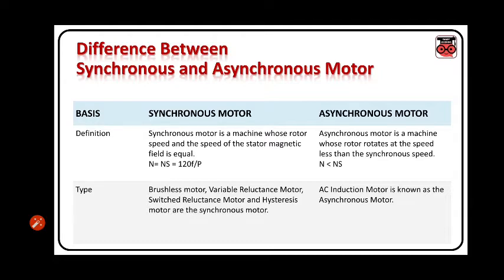Second parameter: type. Brushless motor, variable reluctance motor, switched reluctance motor, and hysteresis motor are synchronous motors. Whereas AC induction motor is known as the asynchronous motor.